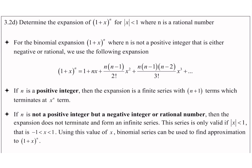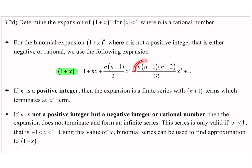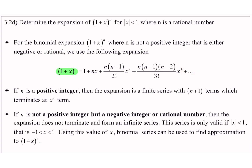Kalau kita nak cari expansion di mana kita nak (1 + x)^n dan modulus x dia mesti kurang daripada 1, di mana n dia tu adalah rational number. Expansion yang melibatkan n yang rational number, kita akan guna expansion ni. Apa yang beza dekat sini adalah, kalau expansion yang n dia adalah positif, kita tahu kita akan dapat finite series. Kalau dia rational number, so kita tahu yang kita dapat dekat sini adalah infinite series.